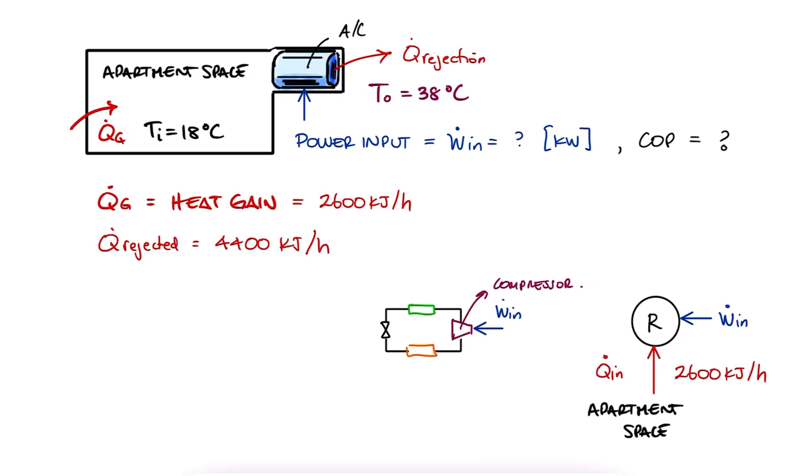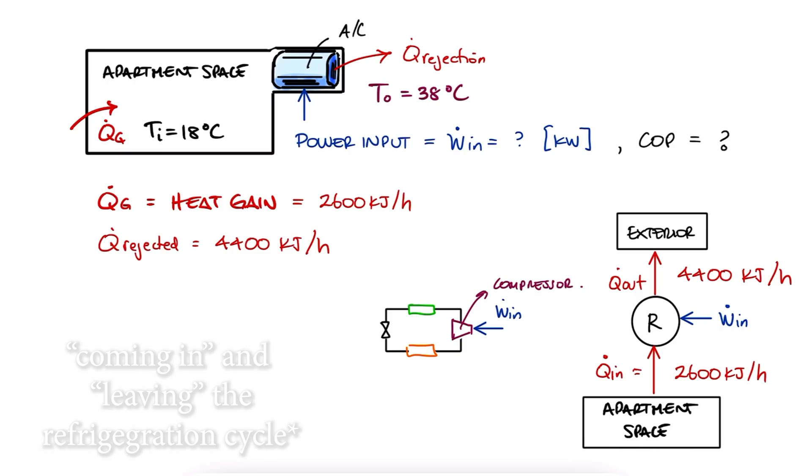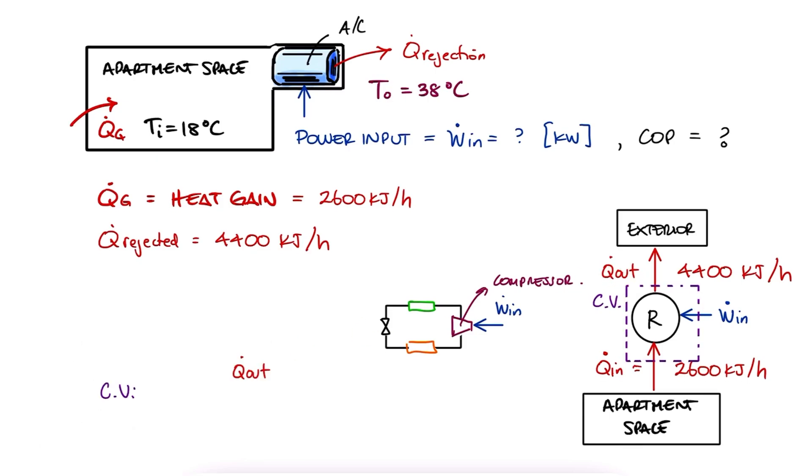Since 2600 kJ per hour are coming in and 4400 leaving, it means that the power coming in is the difference, 1800 kJ per hour. Since kilowatts is kJ per second, we do a simple unit conversion and find that the power in is half a kilowatt.